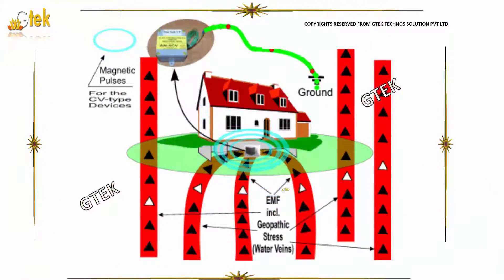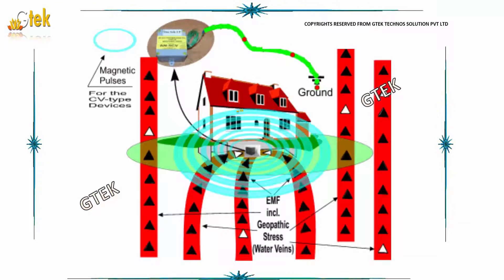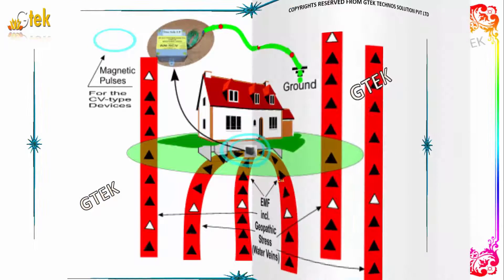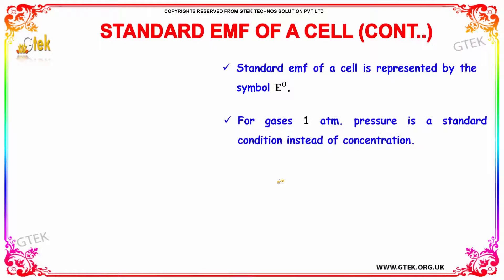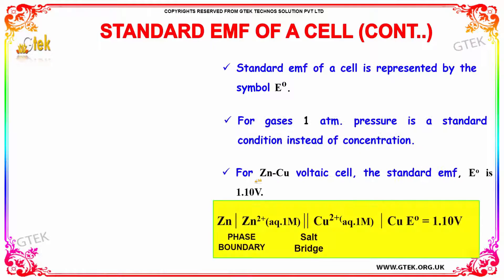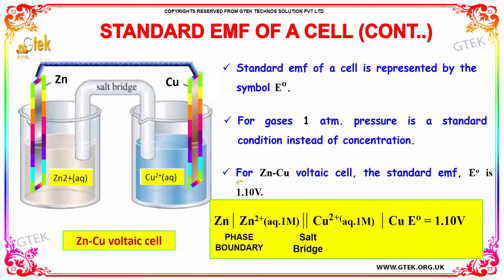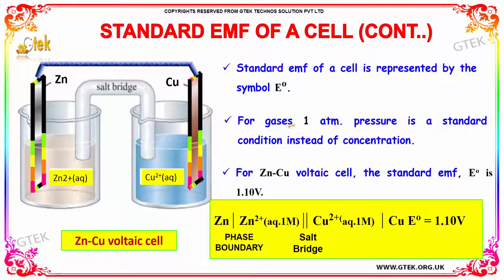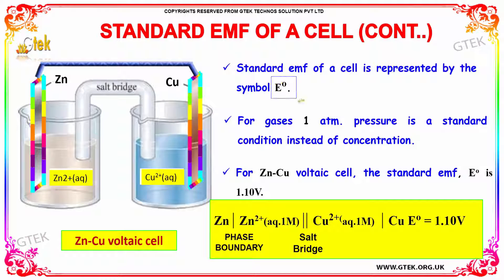You can see the real-time depiction of EMF. The standard EMF of a cell is represented by the symbol E0. For gases, 1 atmospheric pressure is used as the standard condition instead of concentration.